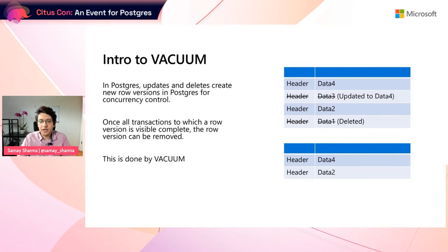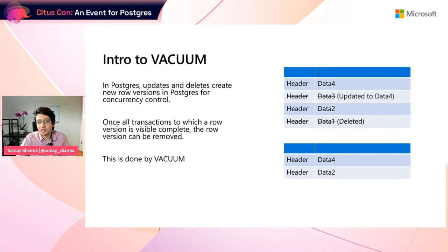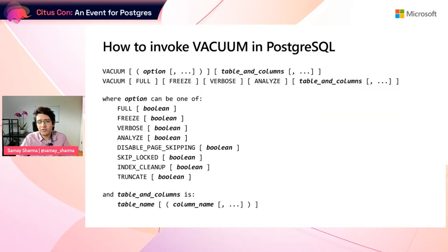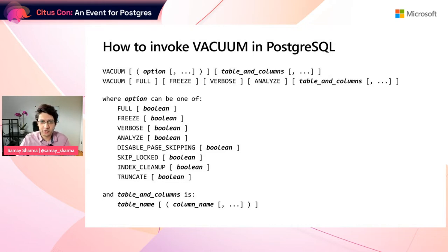Because of this strategy, you end up accumulating a ton of dead tuples. Someone has to come and clean them up to free up space, otherwise your database will constantly keep growing. The process which does that is known as vacuum. You can issue a vacuum manually — just typing vacuum and enter will vacuum your entire database. For more use cases, you might want to vacuum a specific table, vacuum and freeze certain rows, or analyze with it. It comes with a bunch of options you can read about in the Postgres documentation.